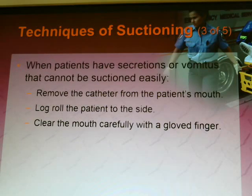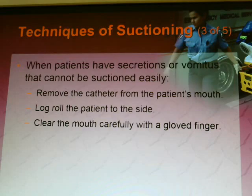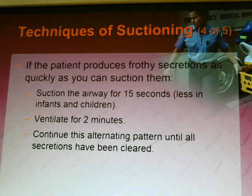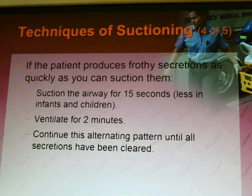When patients have secretions or vomit that cannot be suctioned easily, remove the catheter from the patient's mouth, log roll the patient on his or her side, and clear the mouth carefully with a gloved finger. If the patient produces frothy secretions as quickly as you can suction them, suction the airway for 15 seconds, then ventilate with a bag valve mask for 2 minutes and continue this alternating pattern until all secretions are cleared — you still need to make sure the patient is breathing.